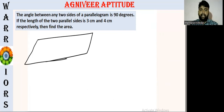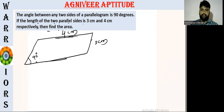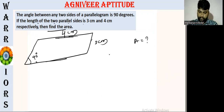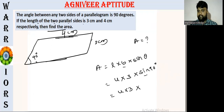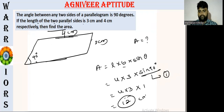So the angle between any two sides is 90 degrees. The length of the two parallel sides is 4 cm and 3 cm. Find the area. So sin theta — B value is 3, theta value is 90 degrees. So 4 into 3 into sin 90 — value is 1. So 4 into 3 is 12 cm squared. So this is 12 cm squared. So this is the parallelogram question.